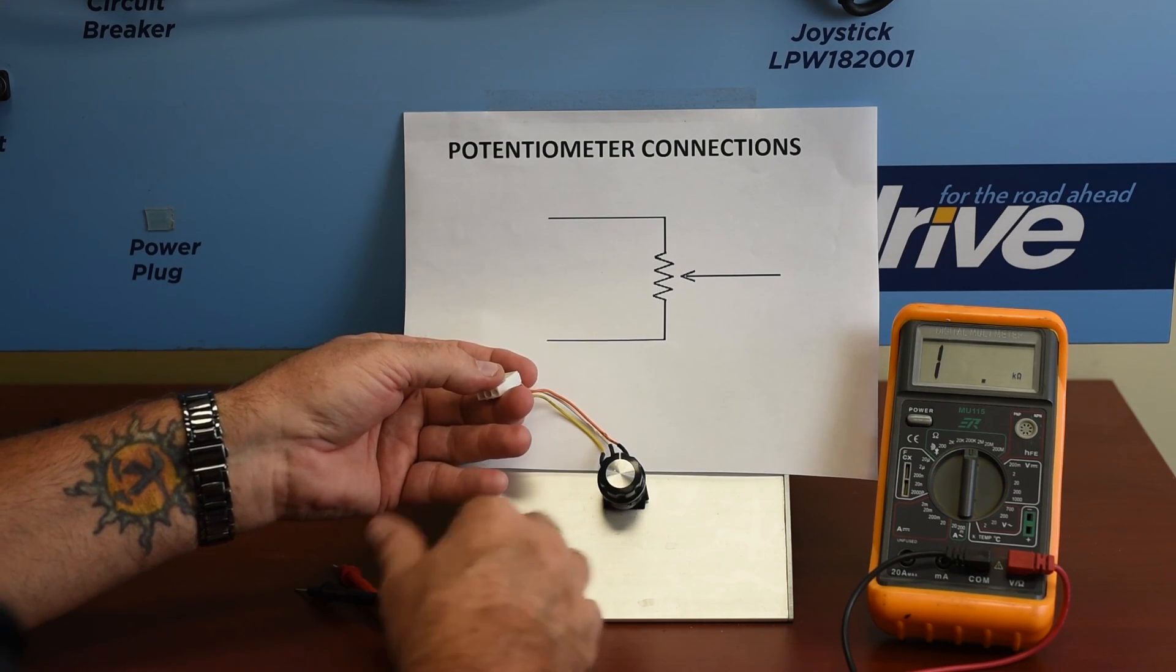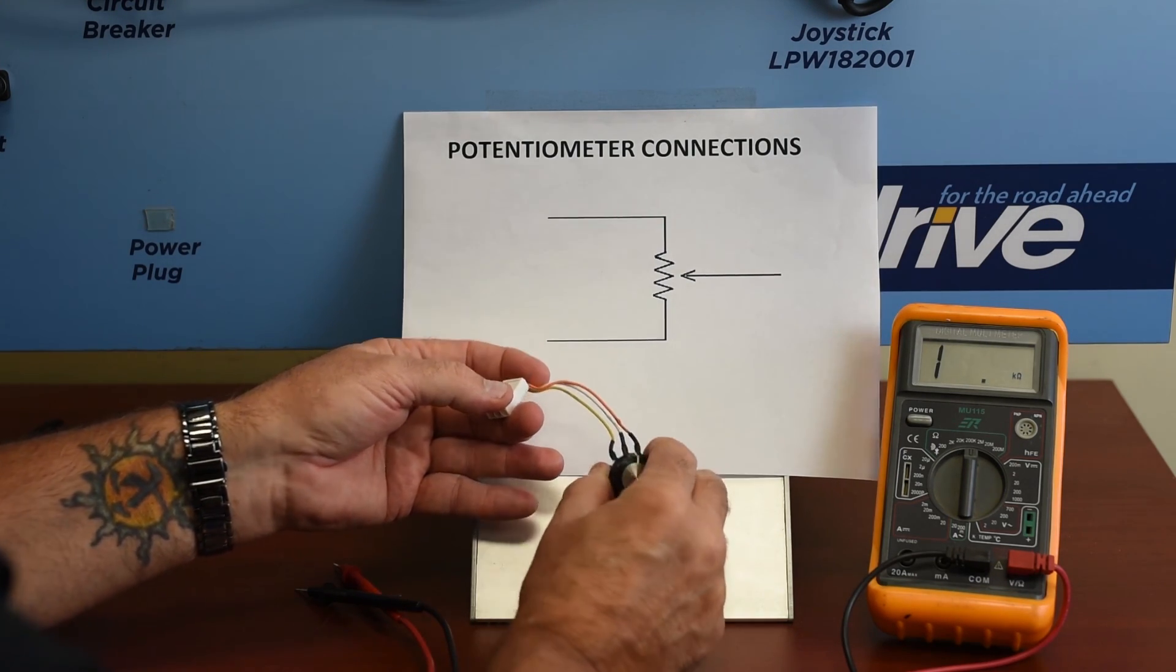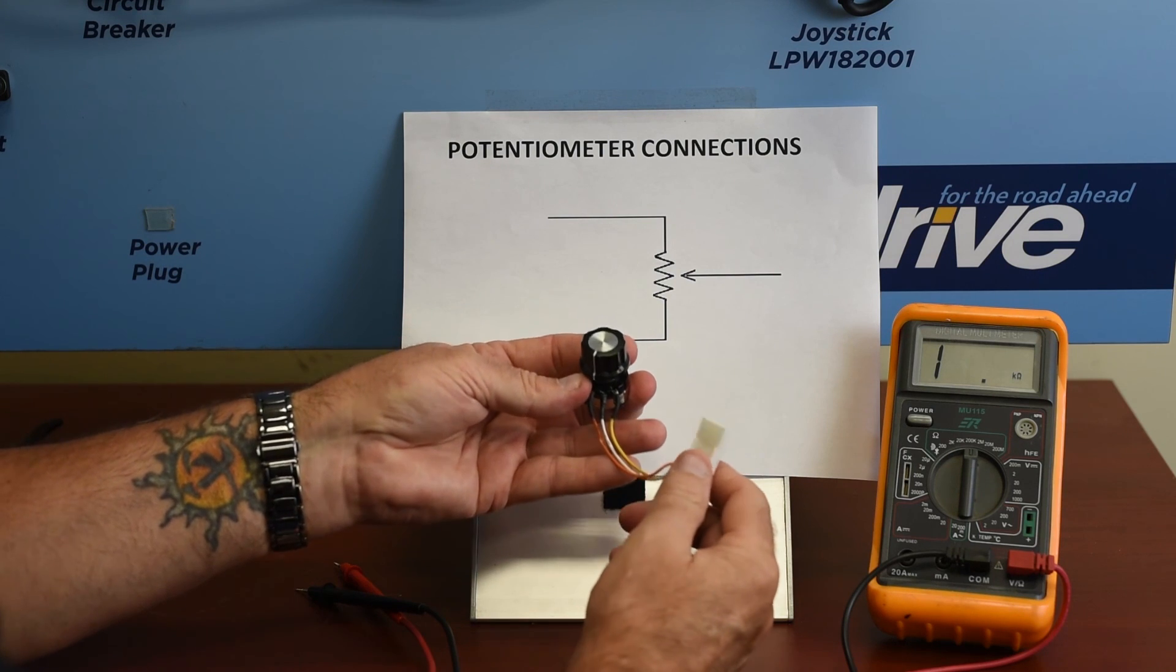And this is showing us that we do have a good pot. The speed pot can go back into the circuit, and we know that it's a good one.